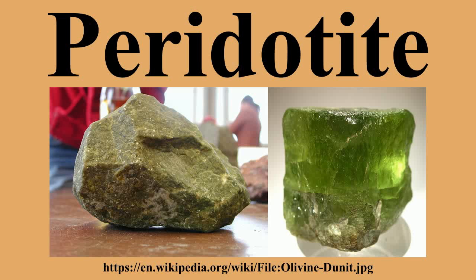Layered peridotites are igneous sediments and form by mechanical accumulation of dense olivine crystals. Some peridotite forms by precipitation and collection of cumulate olivine and pyroxene from mantle-derived magmas, such as those of basalt composition. Peridotites associated with Alaskan-type ultramafic complexes are cumulates that probably formed in the root zones of volcanoes. Cumulate peridotites are also formed in komatiite lava flows. Basaltic magma is formed from lherzolite in the mantle; once the magma moves out, it leaves harzburgite behind in the mantle.